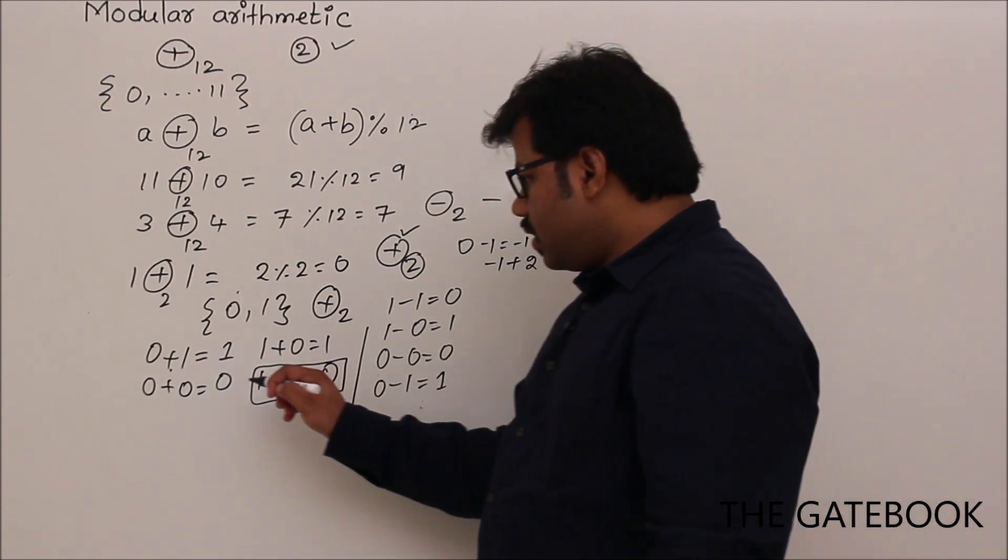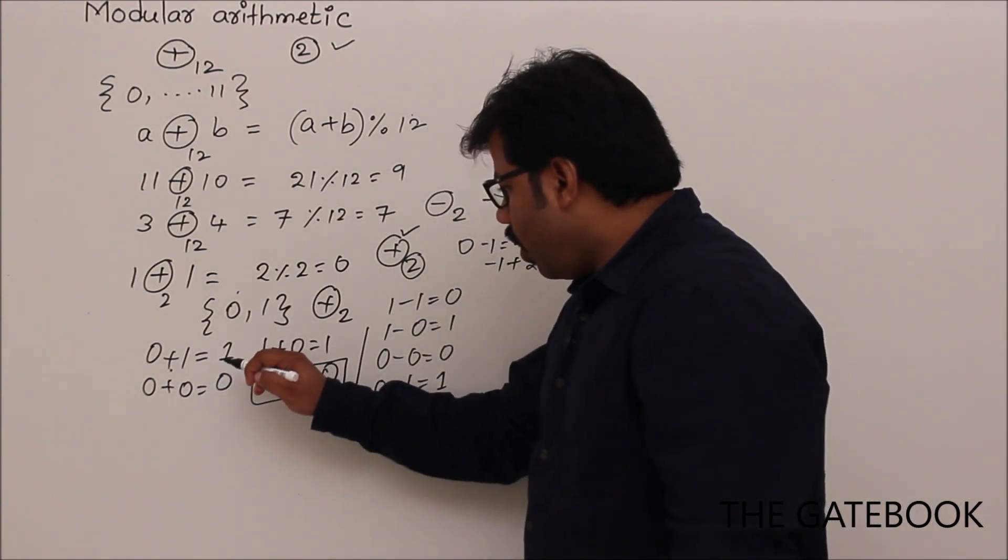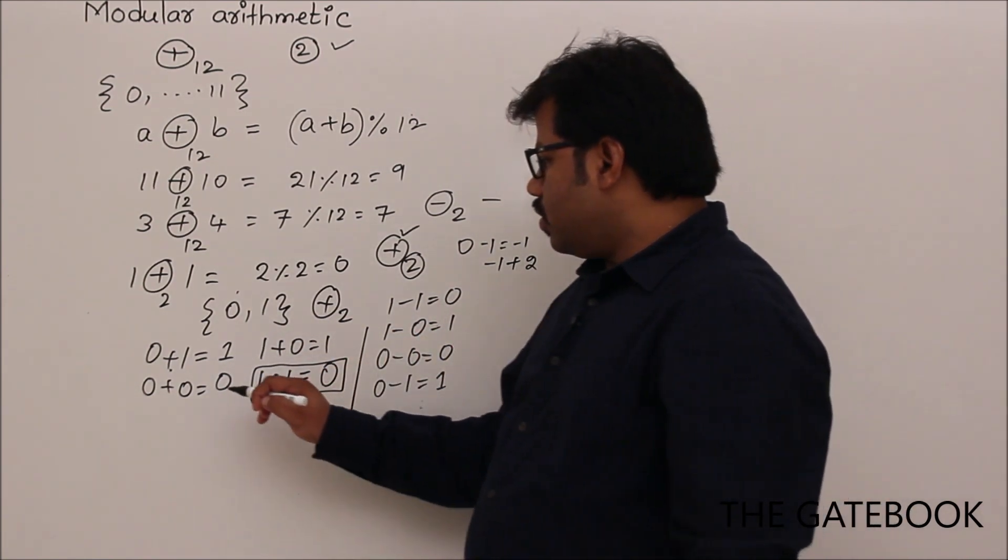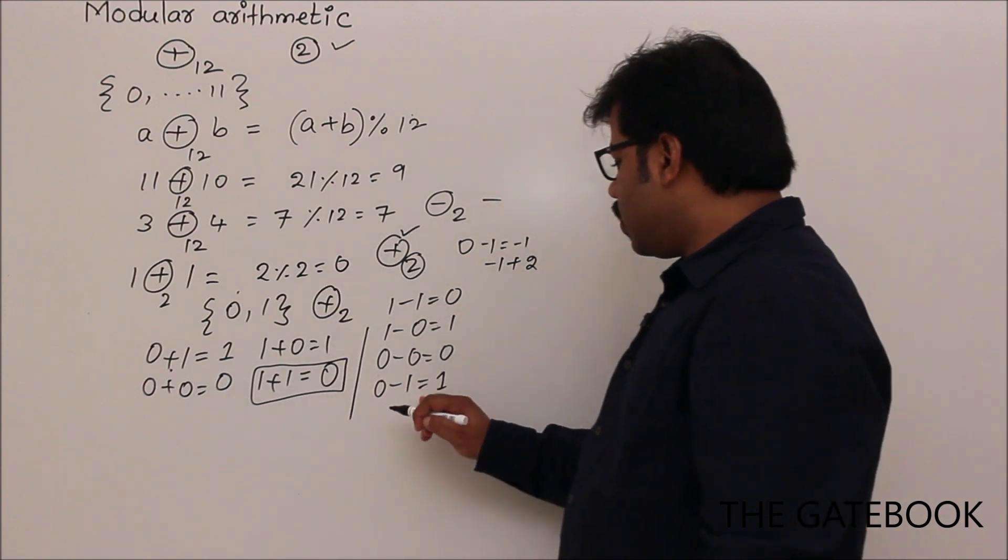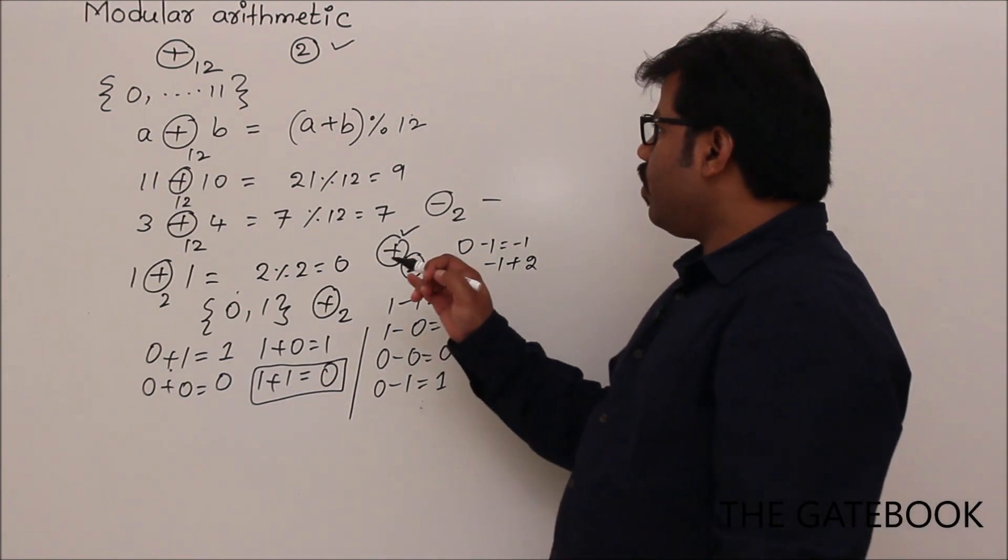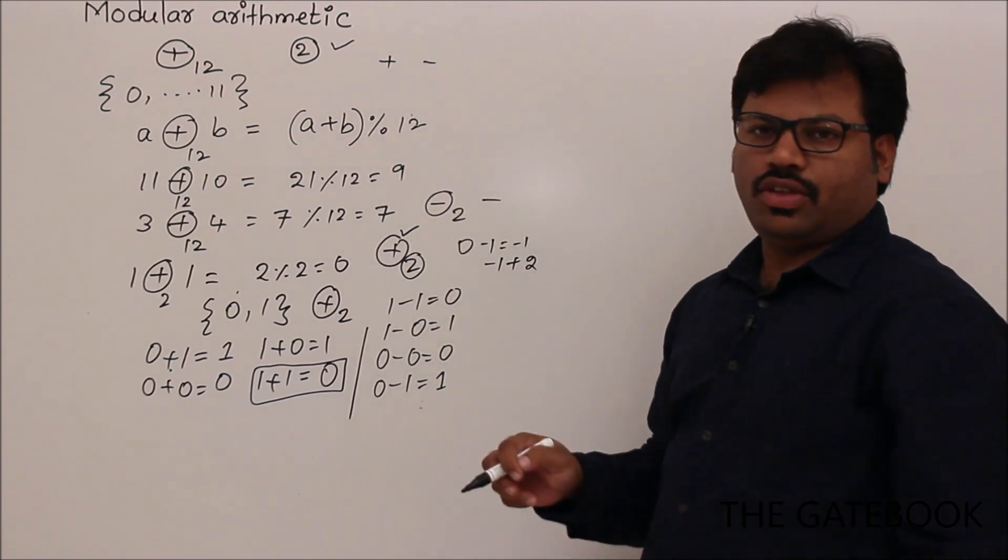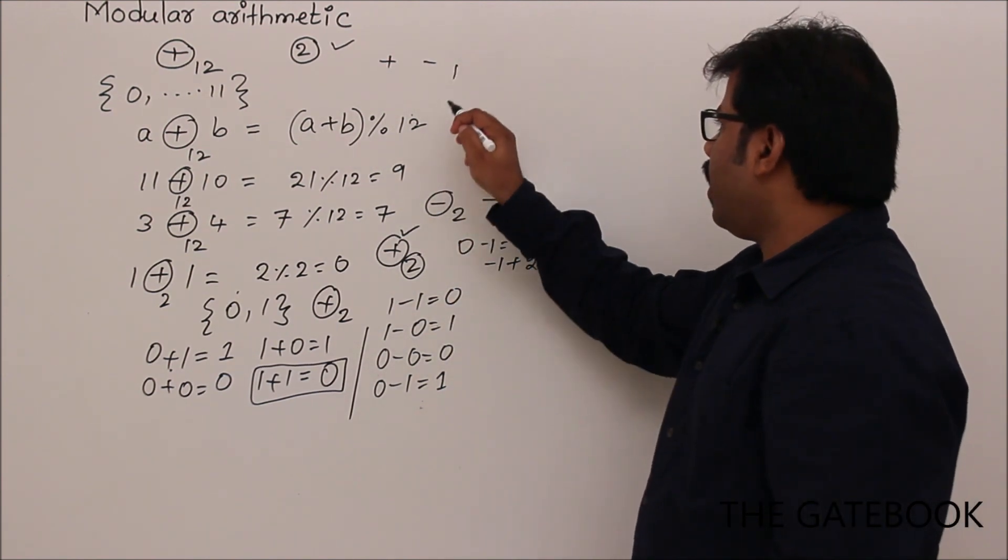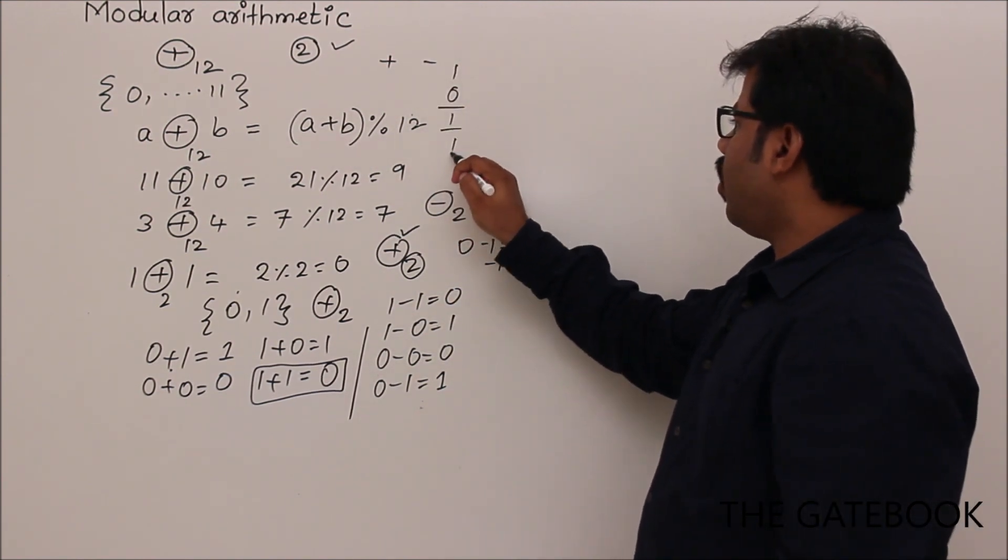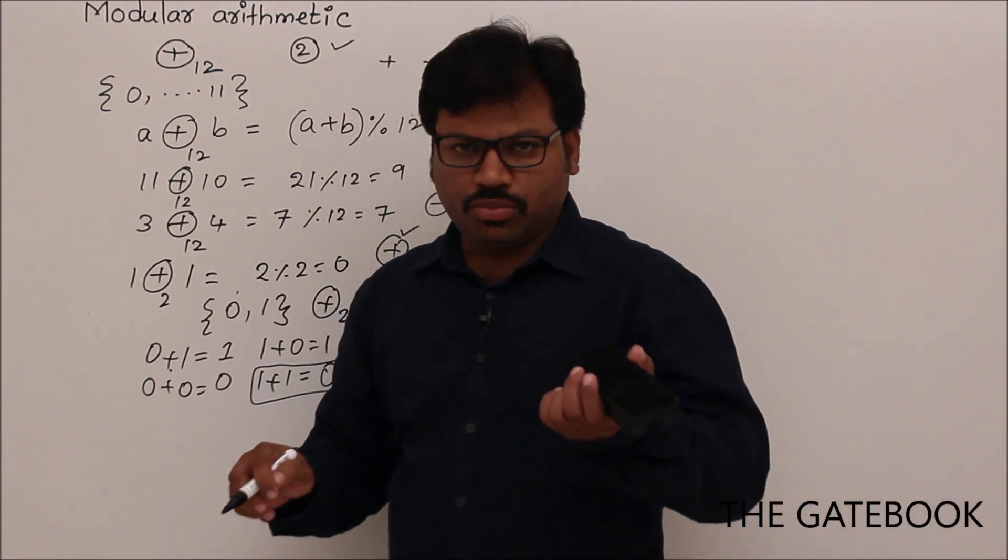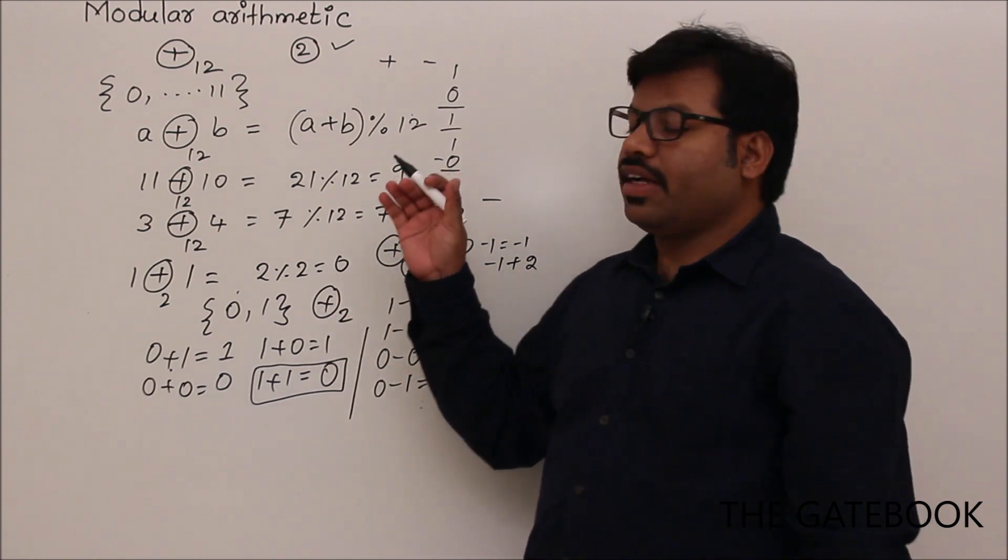So if you observe, 1 plus 0 is 1. 1 minus 0 is 1. 0 plus 1 is 1. 0 minus 1 is 1. So what I want to say is, here there is no difference between addition and subtraction. You take any two combination. Example 1 and 0. 1 plus 0 is 1. 1 minus 0 is 1. In that way, for every combination, you can observe it. So this is about addition and subtraction.